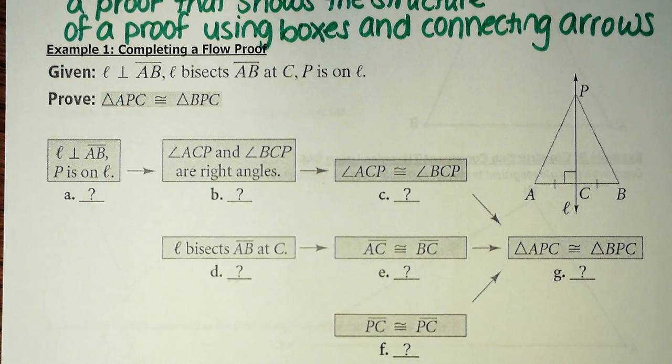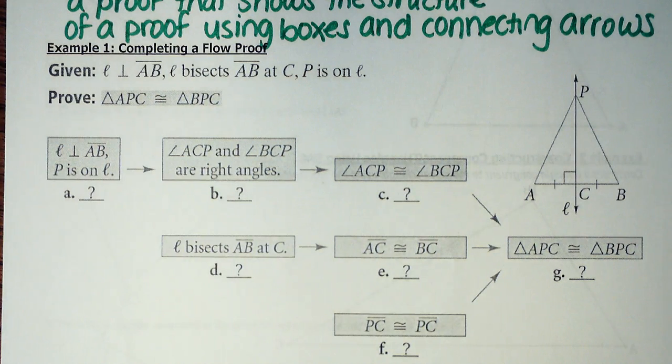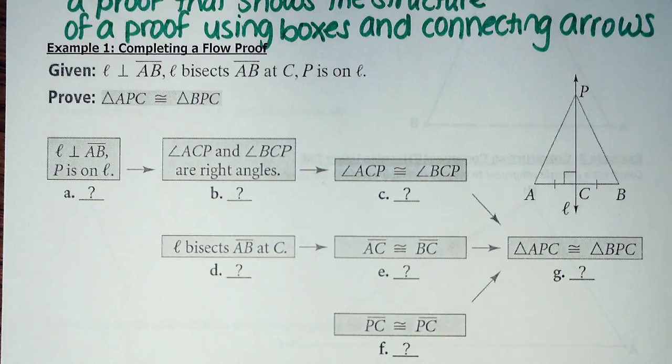So basically, instead of laying out in the two columns, we have different boxes that basically would have what we would call our statements, and then underneath the little box is what we would call the justification in a two-column proof. So what I have here for you guys, this is all completely laid out. We just have to fill in the reasoning for what's going on in the diagram.